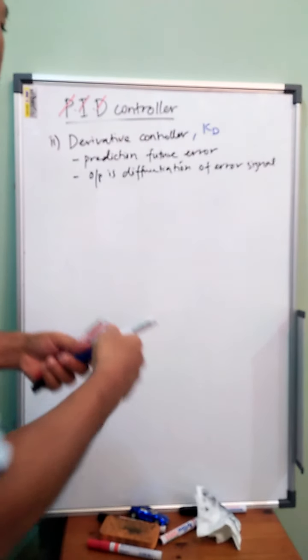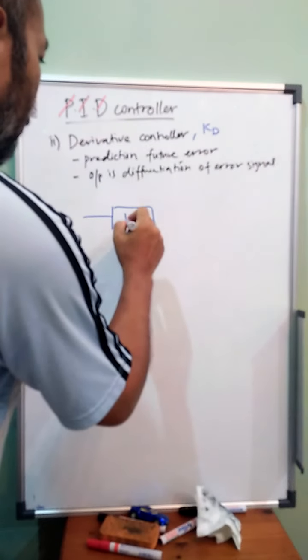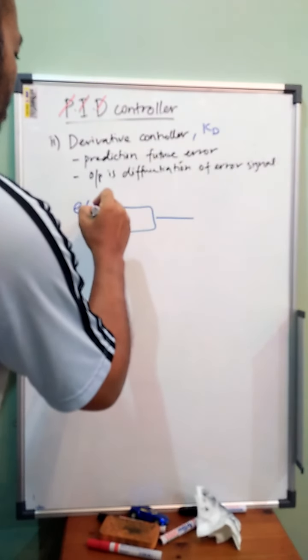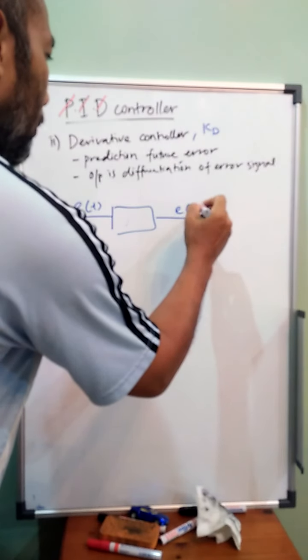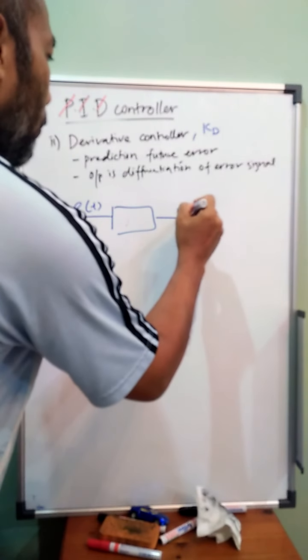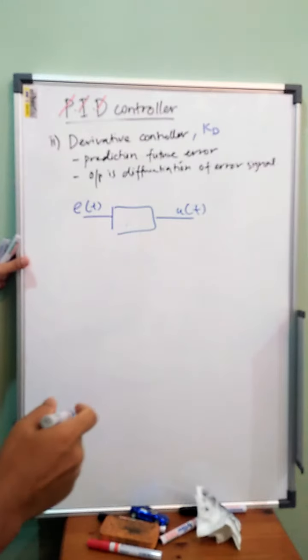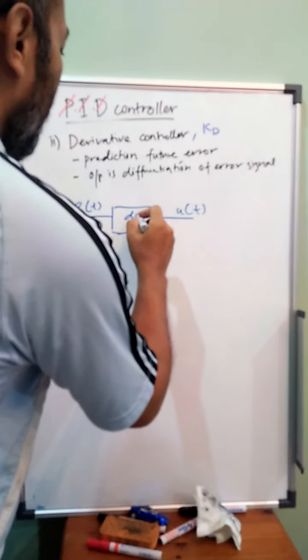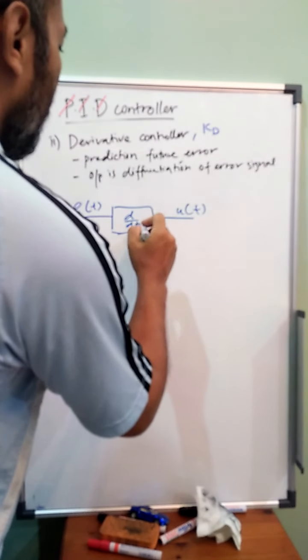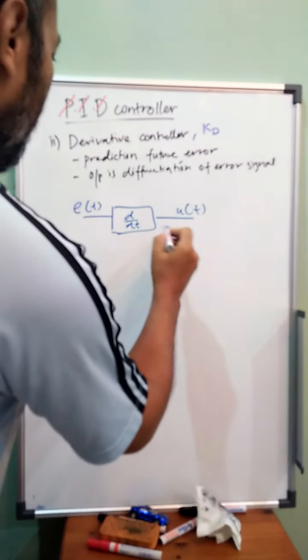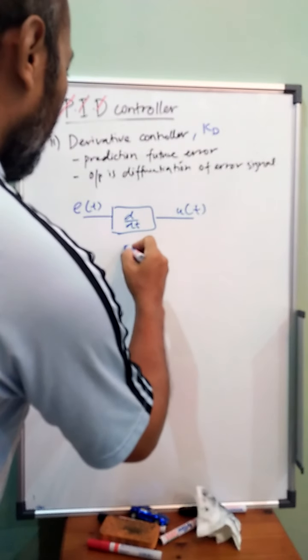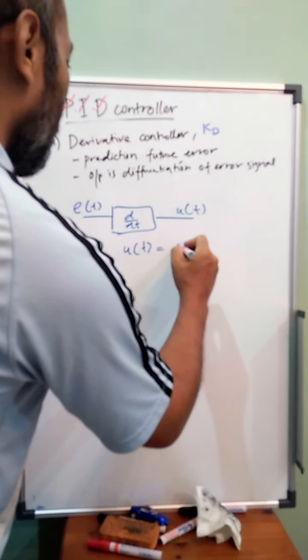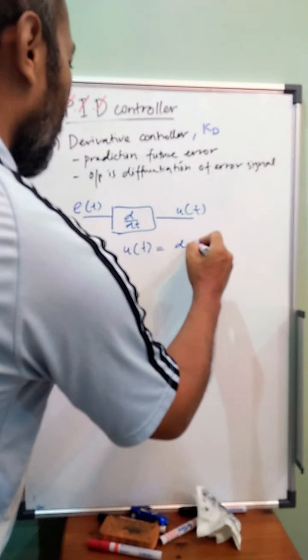So the output is the differentiation of the error signal. Let's say we have a block diagram. This is our error signal, output of the controller. This is controller, d over dt. Output is differentiation of error signal.